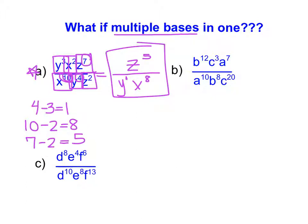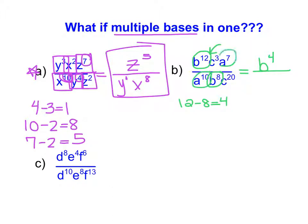Looking at the next example and focusing on one variable at a time: I have b to the power of 12 and b to the power of 8. 12 minus 8 is 4, so I have b to the power of 4 left, and since the 12 in the numerator is bigger, the b to the power of 4 goes in my numerator. I then focus on the a's — I have a to the 10th and a to the 7th, which leaves me with 3 a's. Because a to the 10th is the bigger exponent and is in the denominator, I have a to the power of 3 in my denominator.